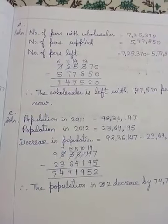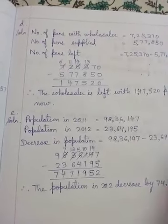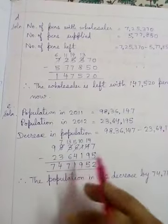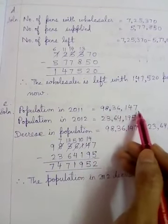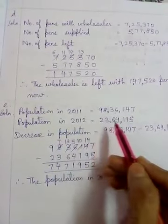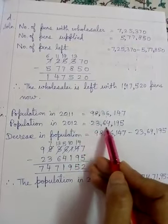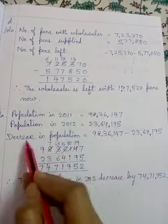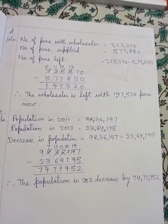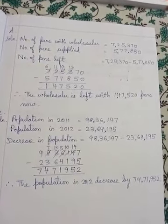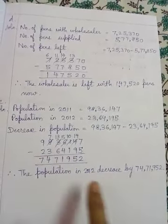Part E: The population of a country is given for 2011 and 2012. The question asks: what is the population decrease? If we look at the 2011 population, it was 98,36,147. But in 2012, perhaps some pandemic or disaster came, and the country's population decreased to 23,64,195. The decrease in population means less in population. How to find that decrease? We have to subtract. That answer will tell us the population in 2012 decreased by this amount.